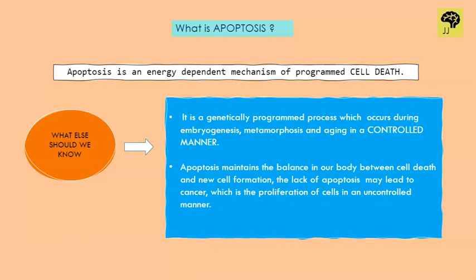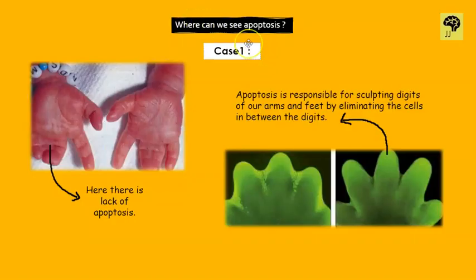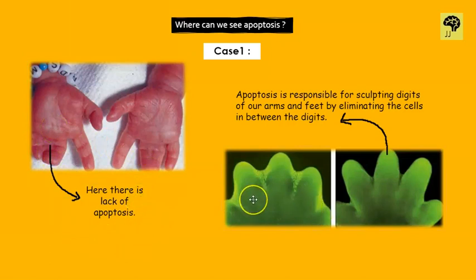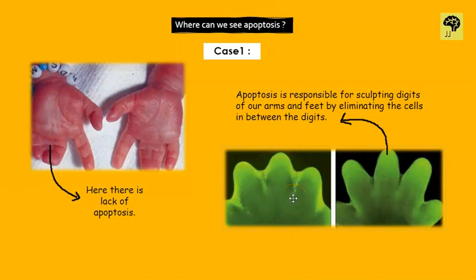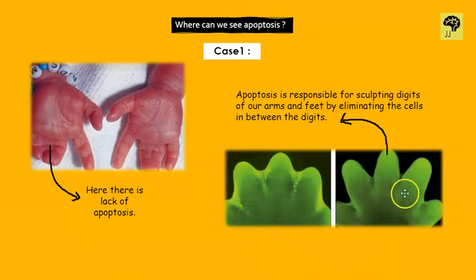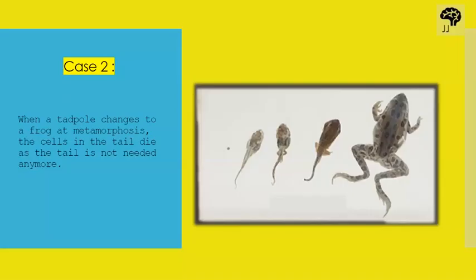Now let's look at some practical examples of apoptosis. Here you can see a child's palm — there is no space between the digits. During embryogenesis, all our hands are like this; there is no partition between the fingers, there are cells in between. During embryogenesis, apoptosis occurs between these digits and those cells are killed, giving us a hand with five separated fingers. So thank you, apoptosis!